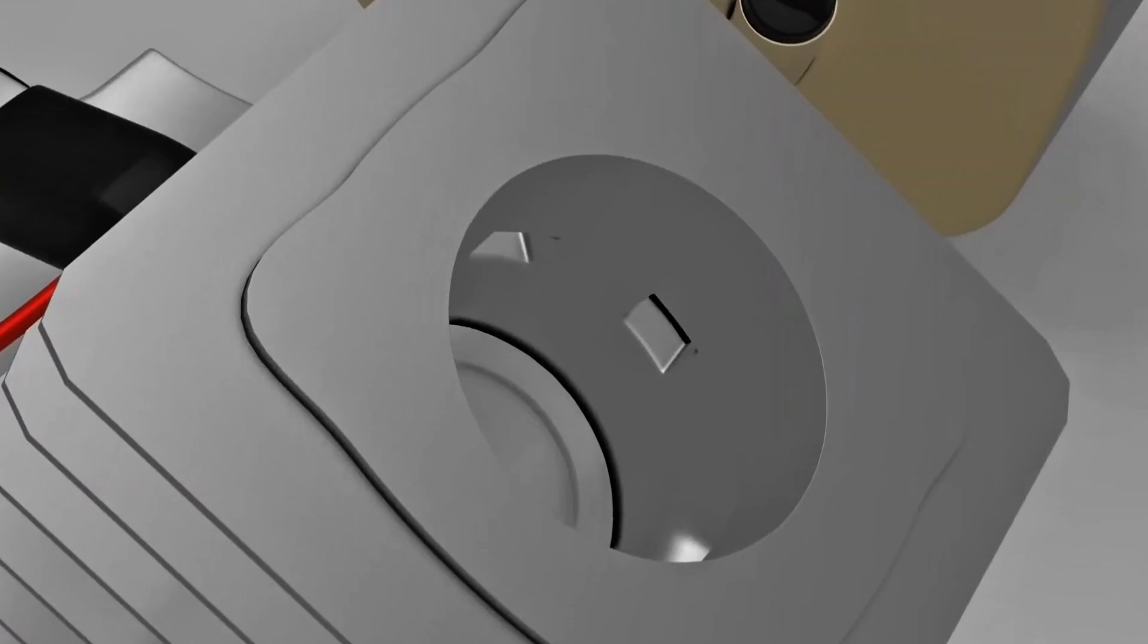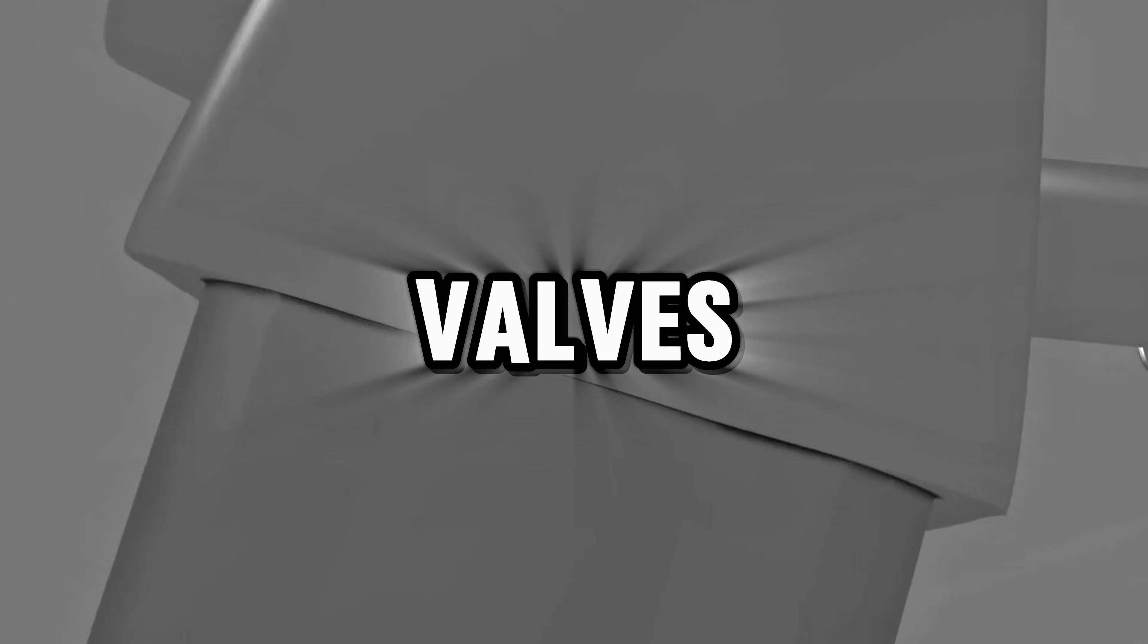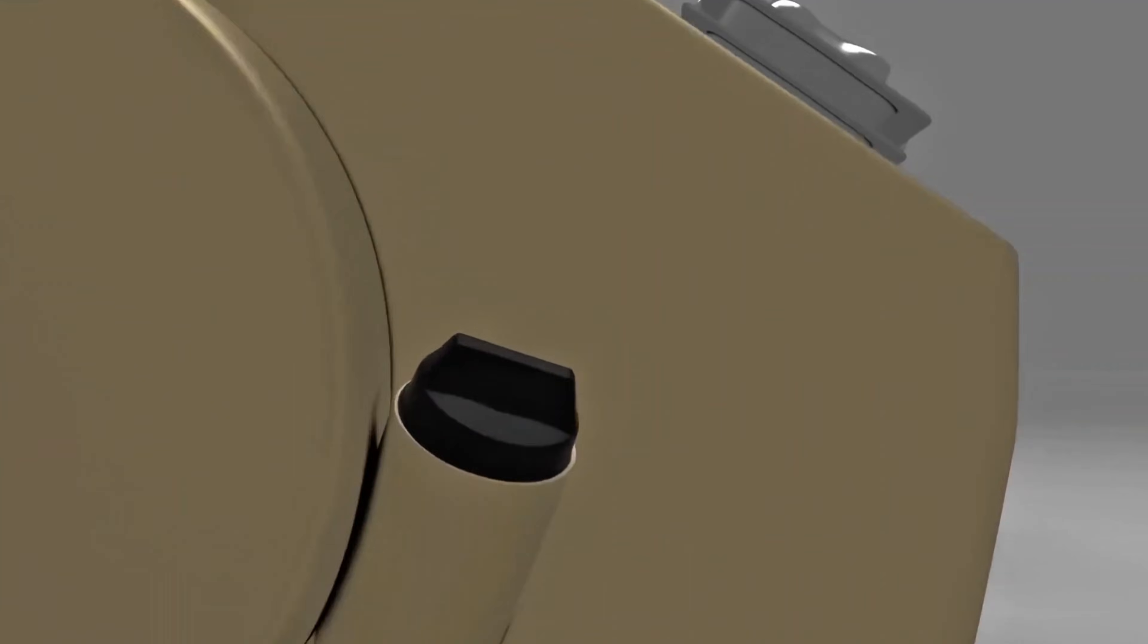These openings serve as pathways for combustion materials to flow in and out. In a four-stroke engine, materials like fuel and air move through valves, directly connecting to the combustion chamber.